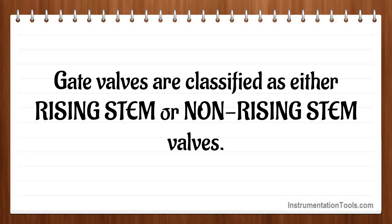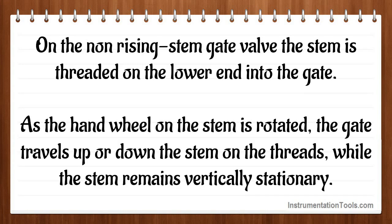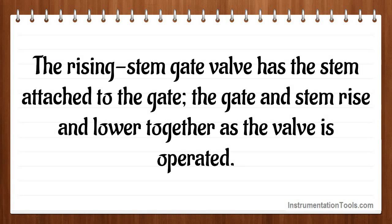Gate valves are classified as either rising stem or non-rising stem valves. On the non-rising stem gate valve, the stem is threaded on the lower end into the gate. As the handwheel on the stem is rotated, the gate travels up or down the stem on the threads, while the stem remains vertically stationary. The rising stem gate valve has the stem attached to the gate; the gate and stem rise and lower together as the valve is operated.